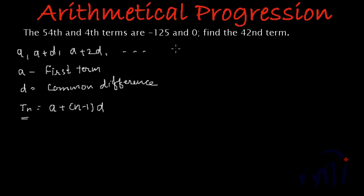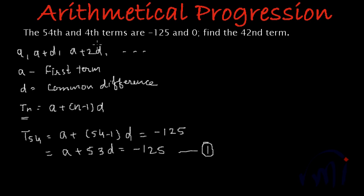So 54th term can be written as t54. If I write it as t54, this will be a plus (54-1)d. And this is equal to -125. And if we simplify it further, it will be a plus 53d is equal to -125. Let us call this as equation number 1.